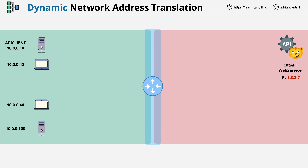The principle of dynamic NAT is similar to static, except devices are not allocated a permanent public IP. Instead, they're allocated one temporarily from a pool.